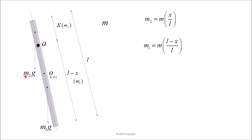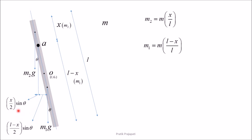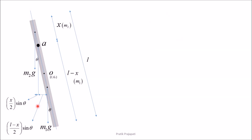Take the initial angular position of the rod as theta with the vertical line. The horizontal distance from the center of gravity of the lower portion to hinge point A will be (l minus x) divided by 2, times sine theta. The horizontal distance from the center of gravity of the upper portion to hinge point A will be x divided by 2, times sine theta.